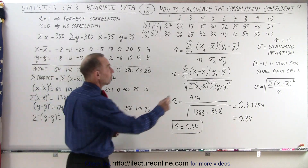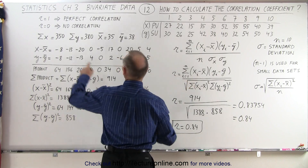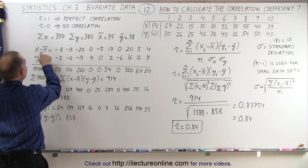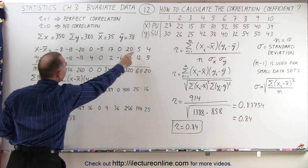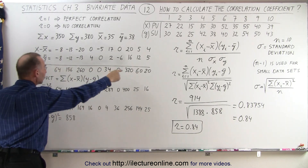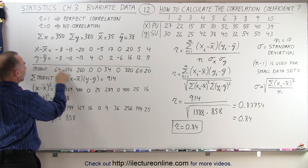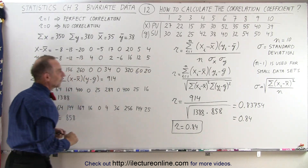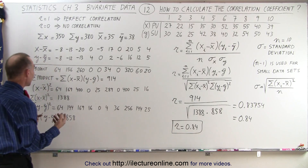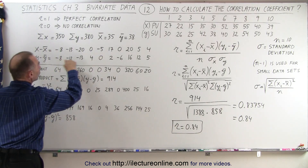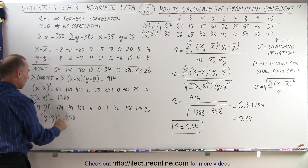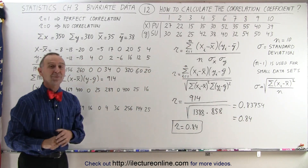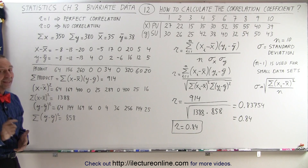The equation can be simplified as follows: first, sum up all the x and y values; then find the average by dividing by the number of data points; then take the difference between each data point and the average for both x and y; then multiply those differences together and sum them up to get 914, which goes in the numerator. Then, square each of those individual differences and sum them up separately for x and y — giving 1388 and 858 — multiply those two numbers together, take the square root for the denominator, and out comes the linear correlation coefficient.